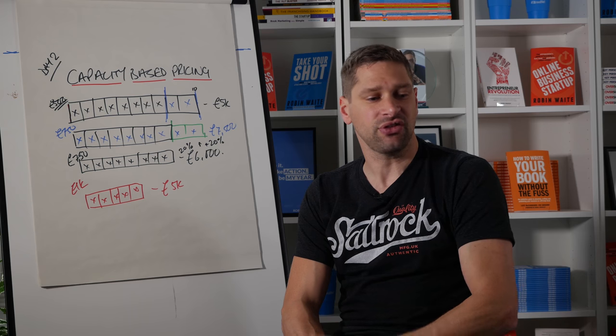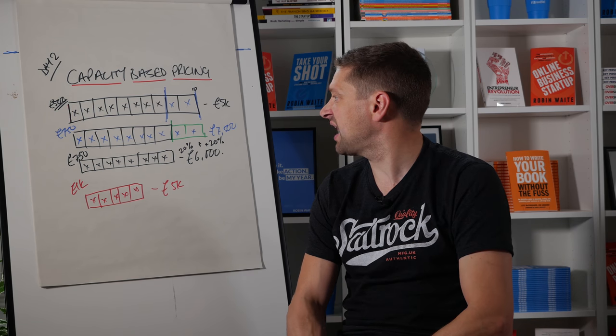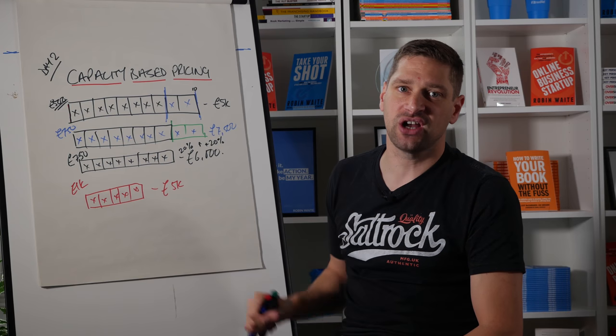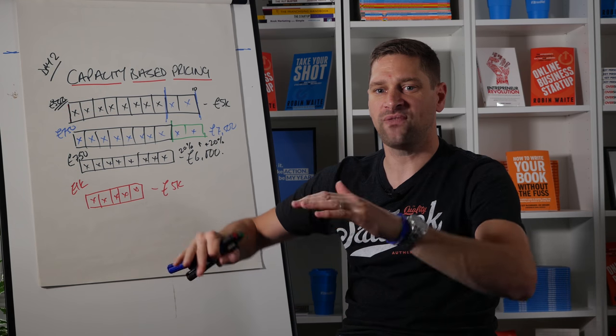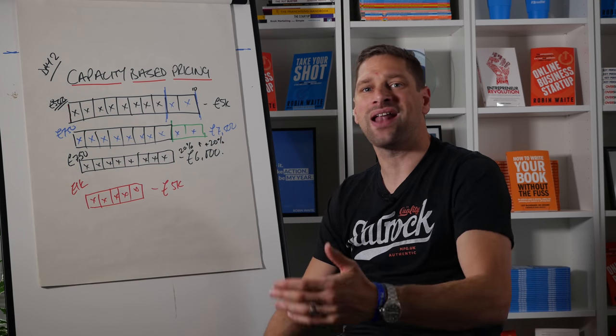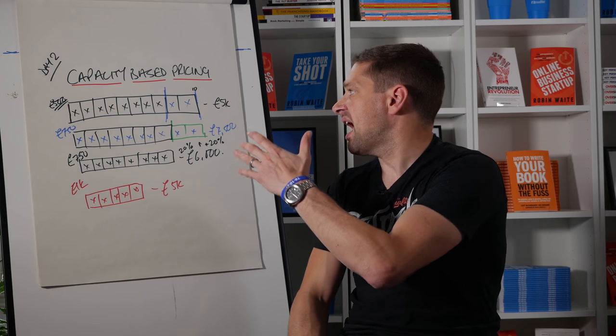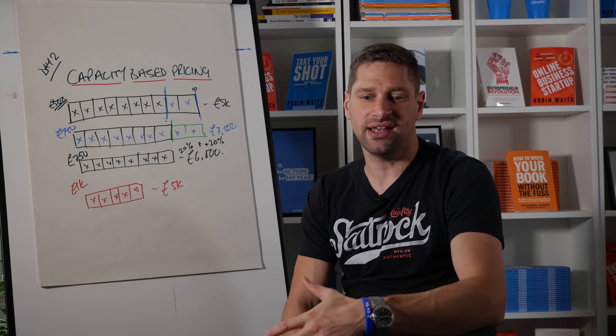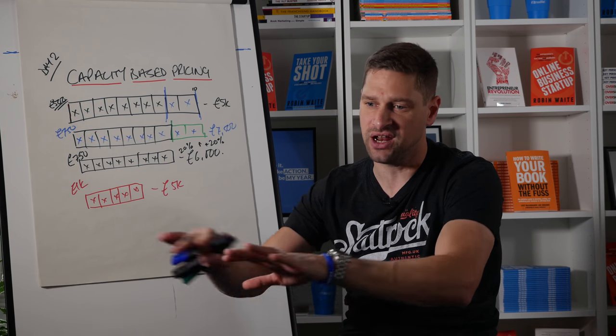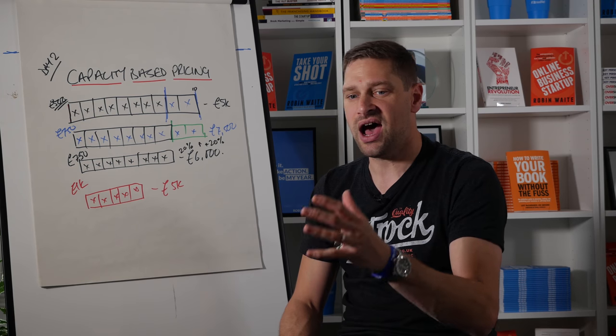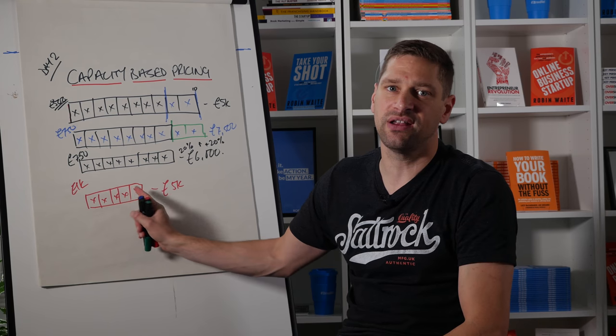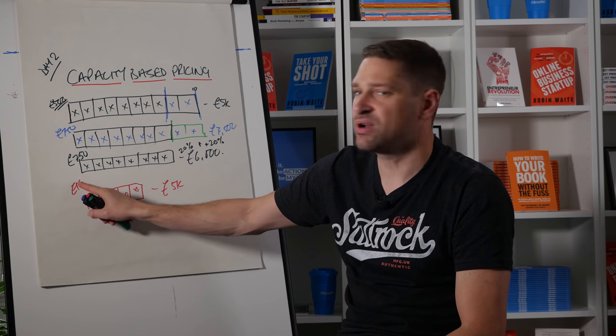So in the worksheet for this day two of the seven day challenge, I'm going to get you to think about what your capacity is, how much you're charging for your products or service, and what flexibility you've got within that. You can't just double your prices without adding any extra value because if the market demand out there, if there's lots of competition and people charging, it's a commoditized industry, you can't get away with that.